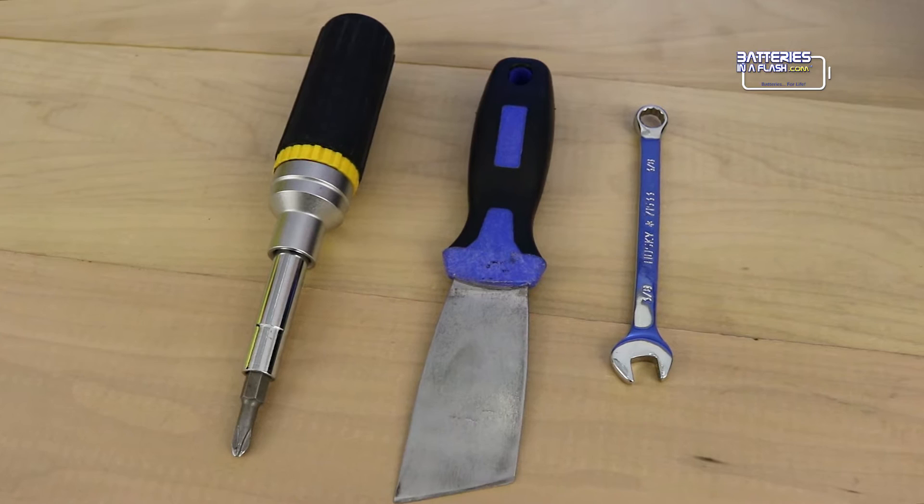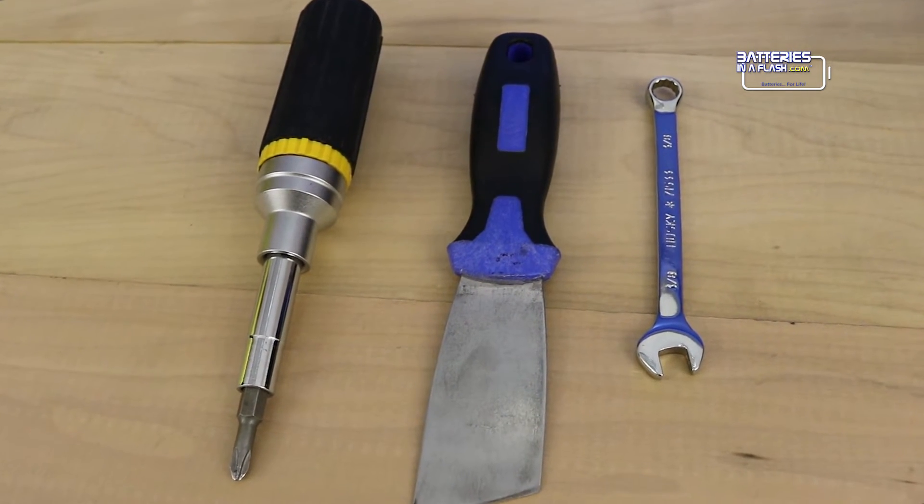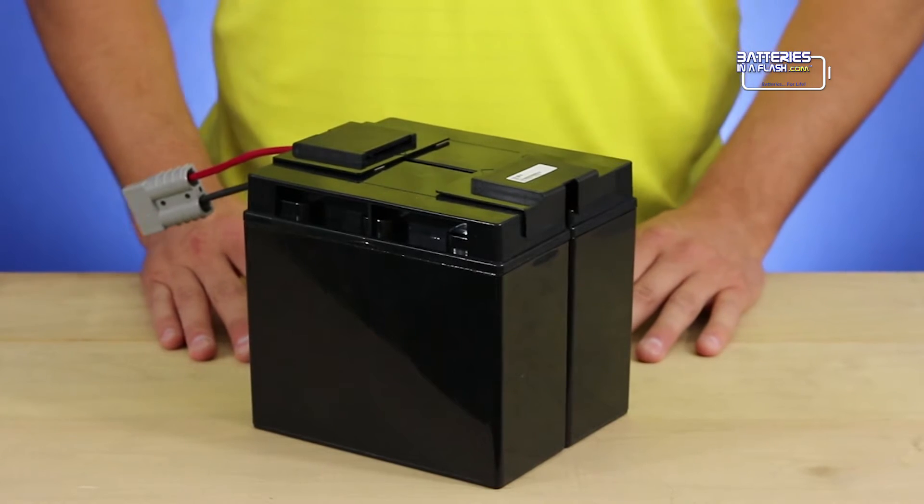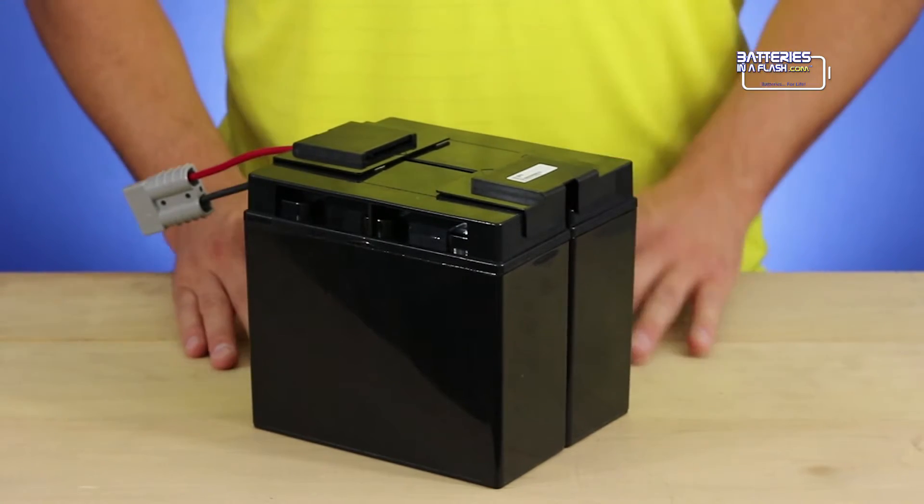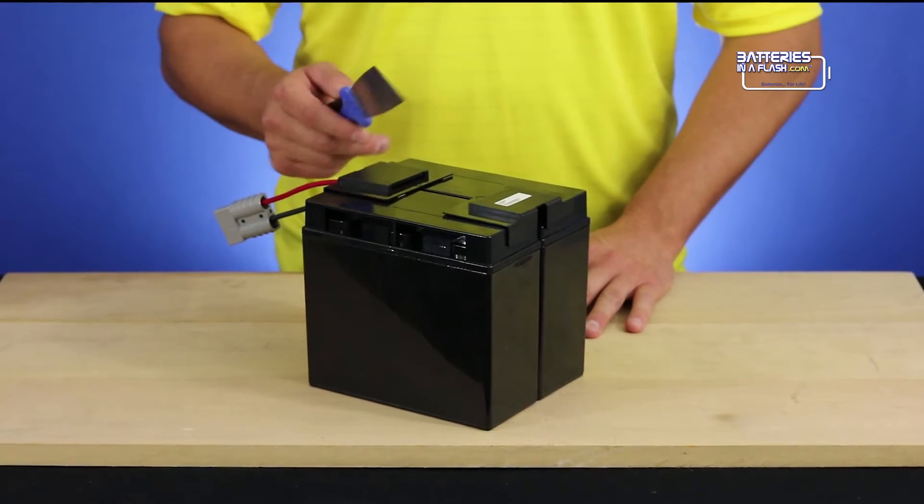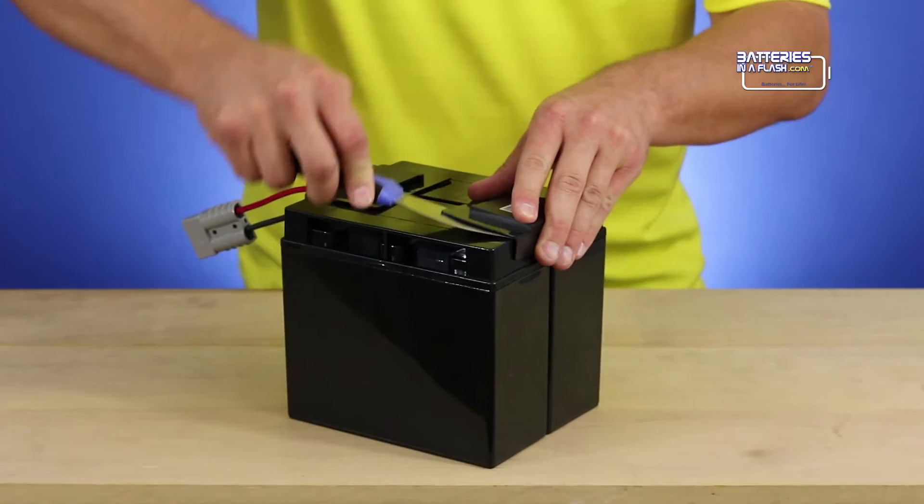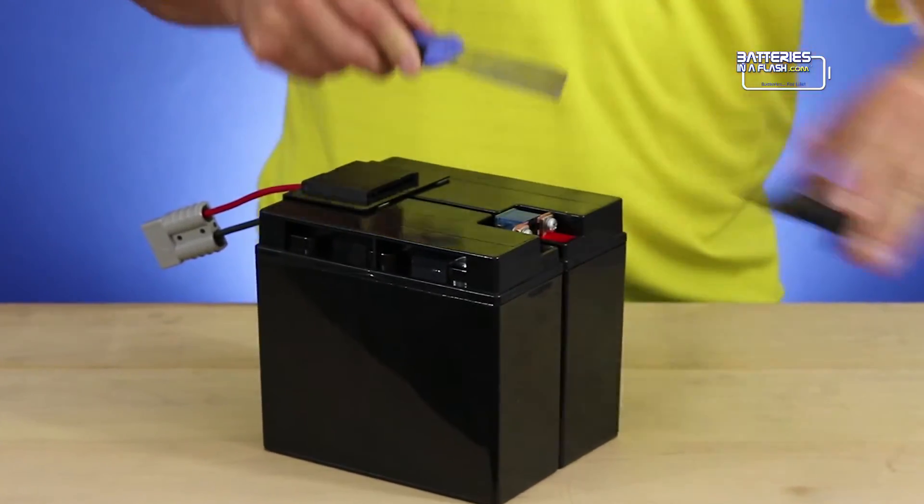I have determined that I need a Phillips screwdriver, a putty knife, and a 3/8 wrench. To begin removing the top plastic protective covers, I will use a putty knife. I prefer using putty knives over a flathead screwdriver because the wider blade and thinner material allows me to remove the covers without any hassle.